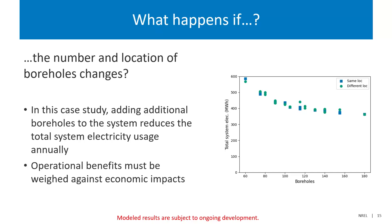As a final example, you can think about what happens as you change the number and location of boreholes around the loop. More boreholes means less energy is used — because you don't need an auxiliary electric boiler — but you have to weigh that against economic impacts: how much did the boreholes cost, and was that cost worth it? What does your trade-off look like there?